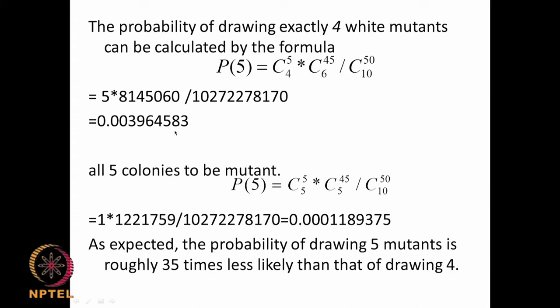What is the probability of getting all 5 as mutants? The remaining 5 in that sample of 10 will be normal. We put x=5 here; other things remain the same. C(5,5) = 1, and we get a very small probability of 0.00011. This is expected — if you want to take out all 5 mutants when taking a sample of 10, it is much less likely than taking out 4 mutants.